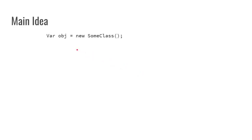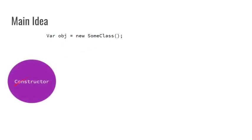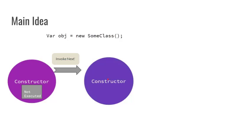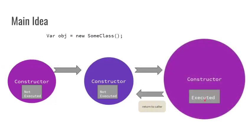We have a class and we want to create an object and invoke its first constructor. The first constructor has been invoked, but its body is not executed. Rather, it passes control to the second constructor. The second constructor's body is also not executed, and it passes control to the third constructor. The third constructor executes its body and returns control back to the second constructor, whose body is then executed.